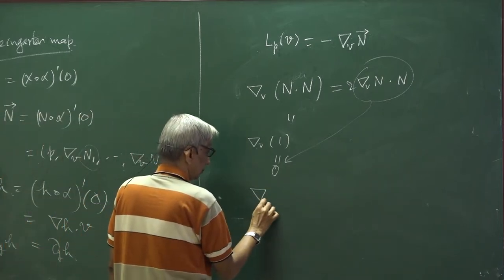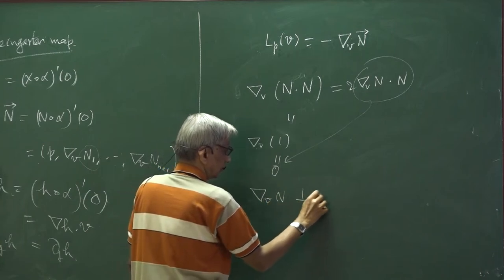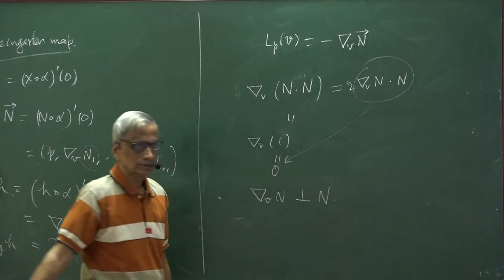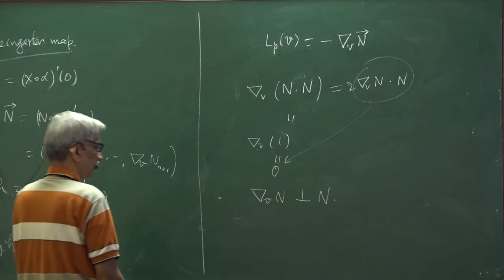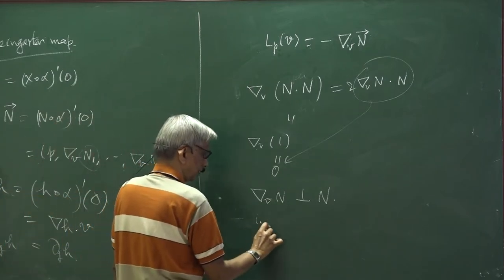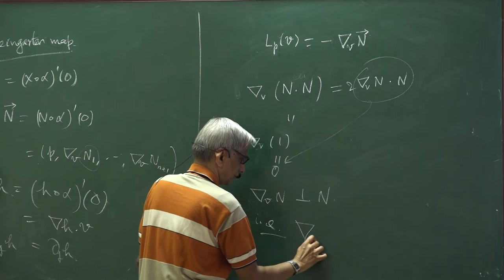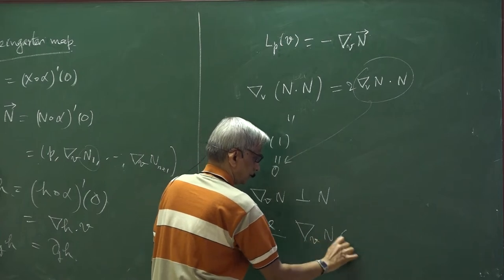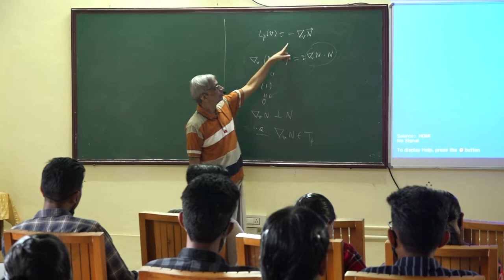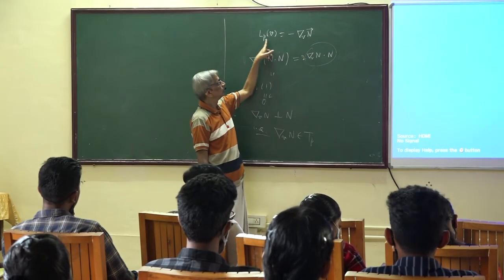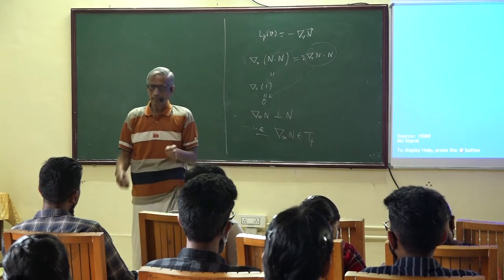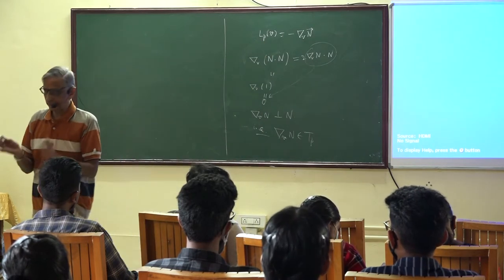So the conclusion is that del_V n is orthogonal to n. In other words, orthogonal to the normal means it is tangent. This is also going to lie in the tangent space. So for any tangent vector V, Lp of V is again a tangent vector. Therefore Lp is a map from the tangent space to itself, T_p.